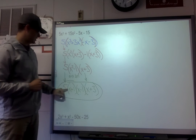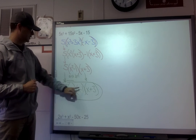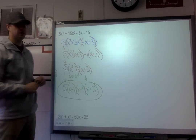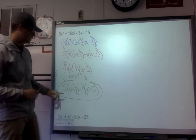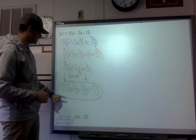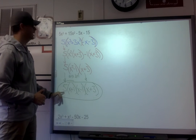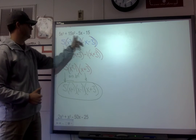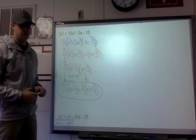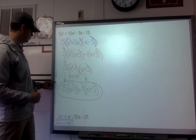5 times (x + 1) times (x - 1) times (x + 3). If we were to foil all of these together and multiply by 5, we would come back out with our original polynomial.